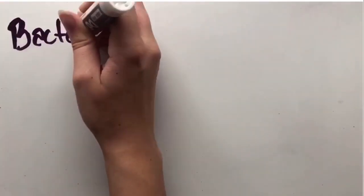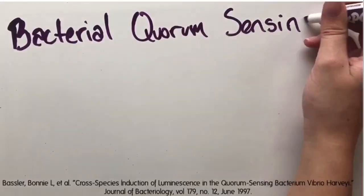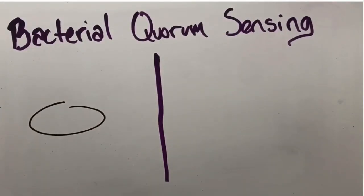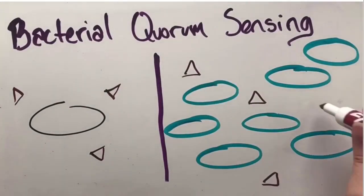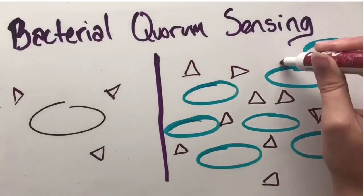Quorum sensing is best demonstrated by the marine bacterium Vibrio fischeri. As a luminescent bacterium, it provides a visual illustration of its responses to fluctuations in population density, making studying that process significantly easier.